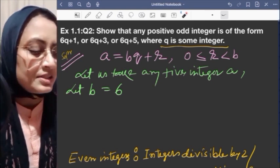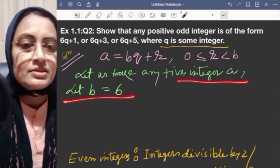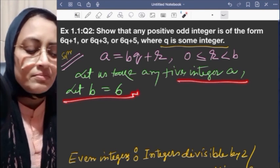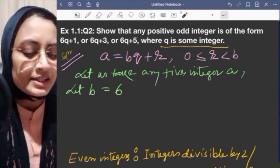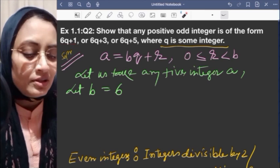Let us take any positive integer a. Let b equal 6. Why b equals 6? Because we have 6q+1, that means 6 or multiple of 6.